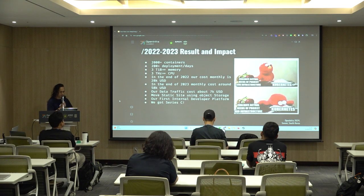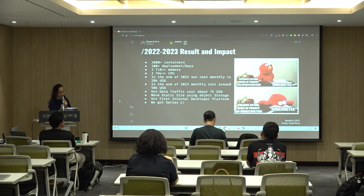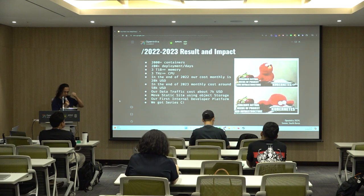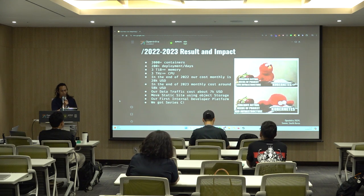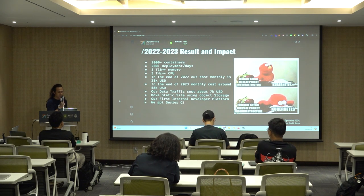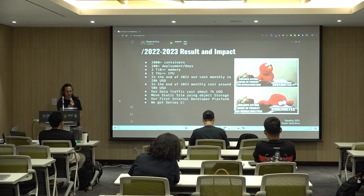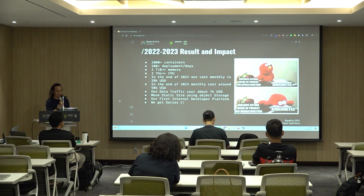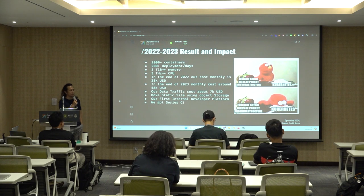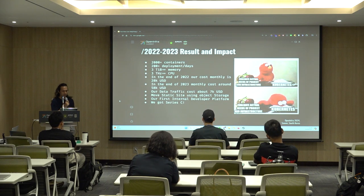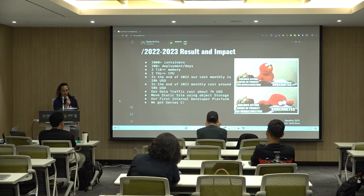The results and impact in 2022 to 2023: we were running close to 200 containers and managing 200 deployments every day. By end of 2022, we kept costs at about $28,000 a month. In 2023, costs jumped to around $58,000 a month. The problem came with data traffic, which cost us about $7,000. We also moved our static sites to object storage and rolled out our first internal developer platform.